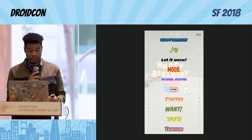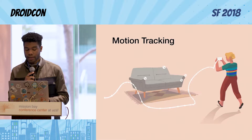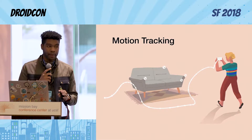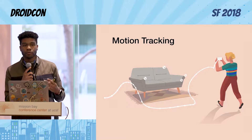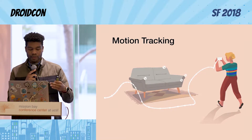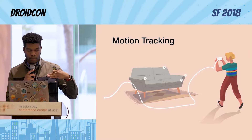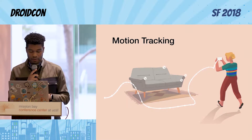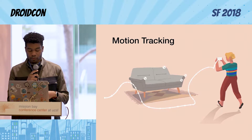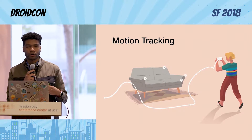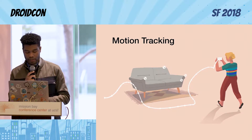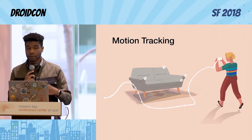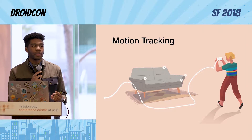ARCore works off of three main principles, the first being motion tracking. ARCore utilizes concurrent odometry and mapping to understand the world through your phone's camera, and it does this to better identify feature points on objects. It estimates its pose — what's known as its position and orientation of the camera relative to the world over time. Combining all of this, it's able to render your 3D objects.